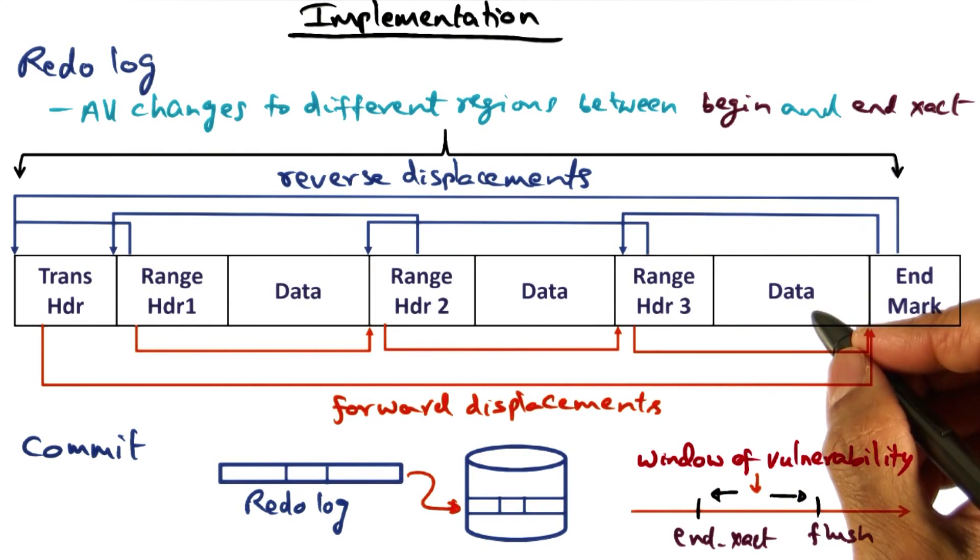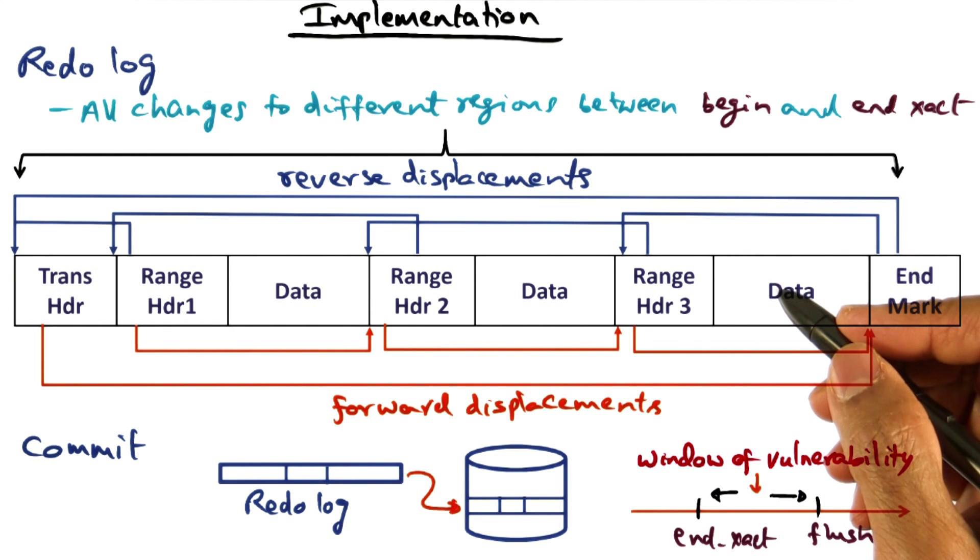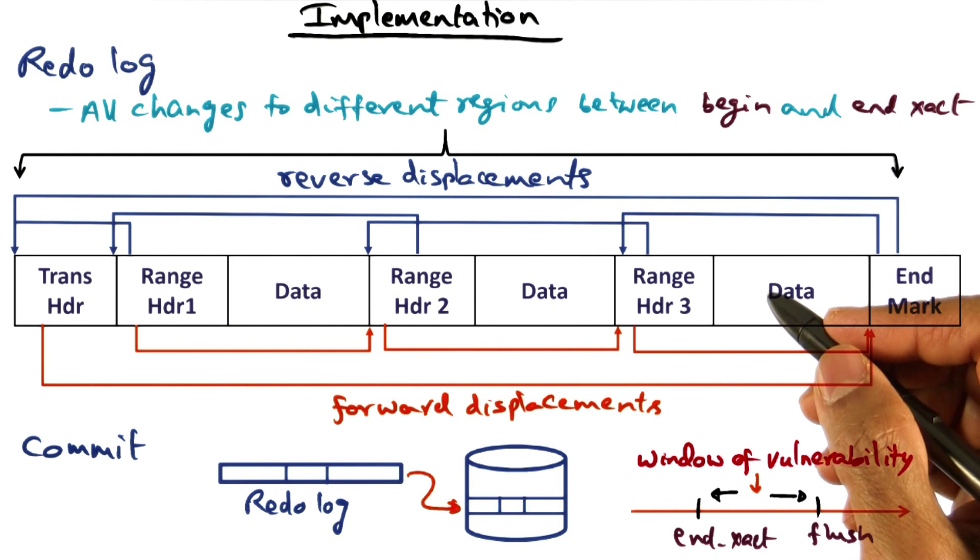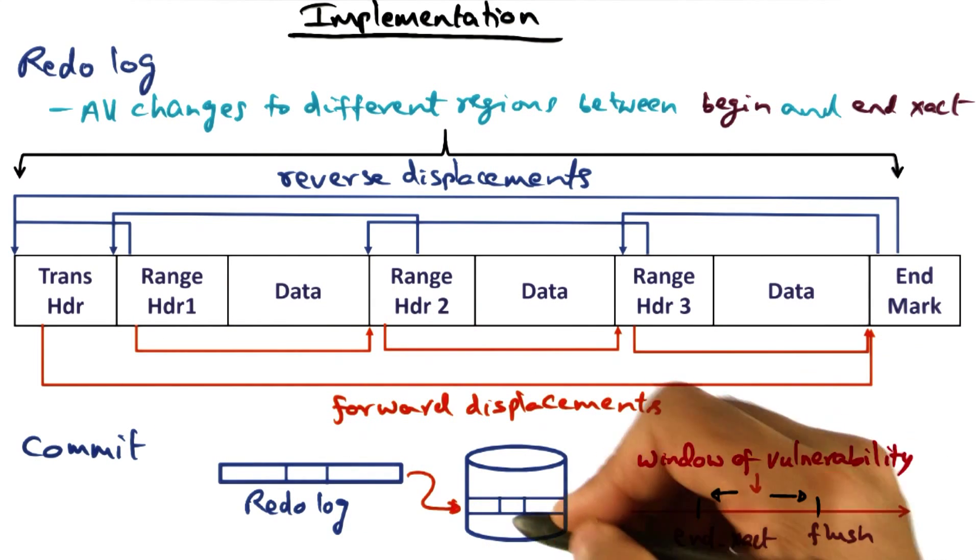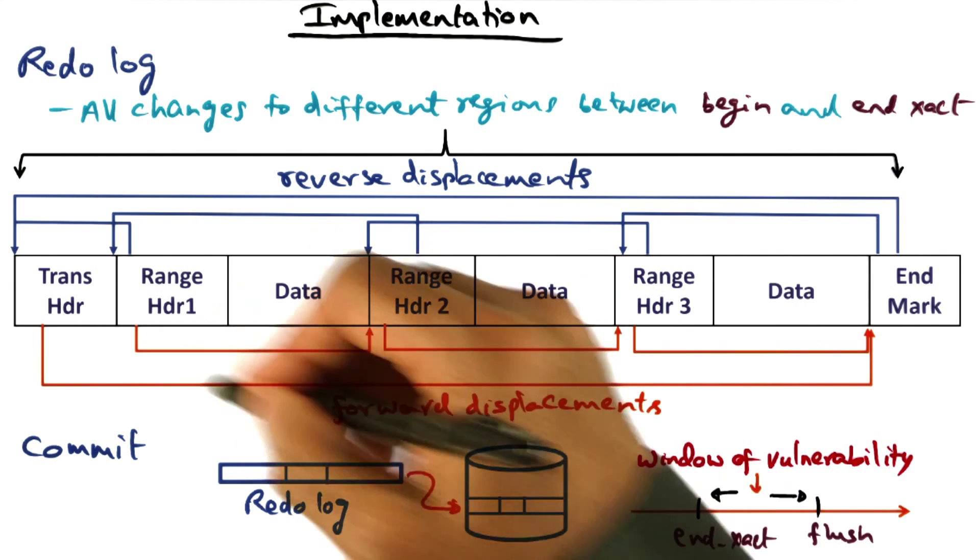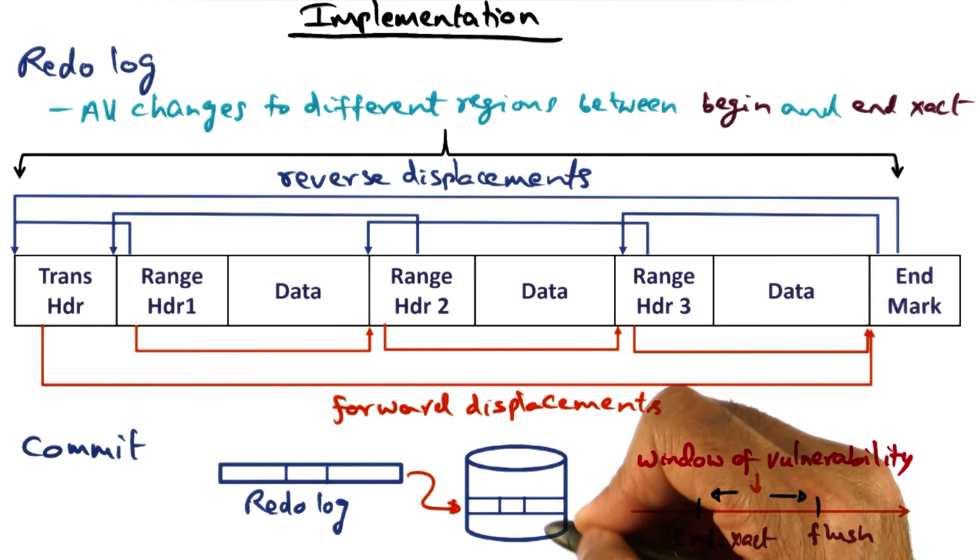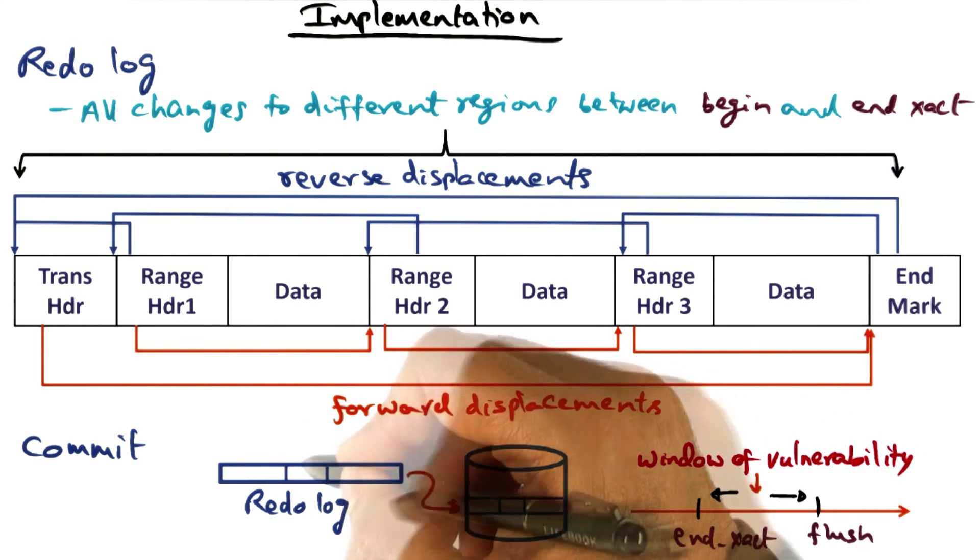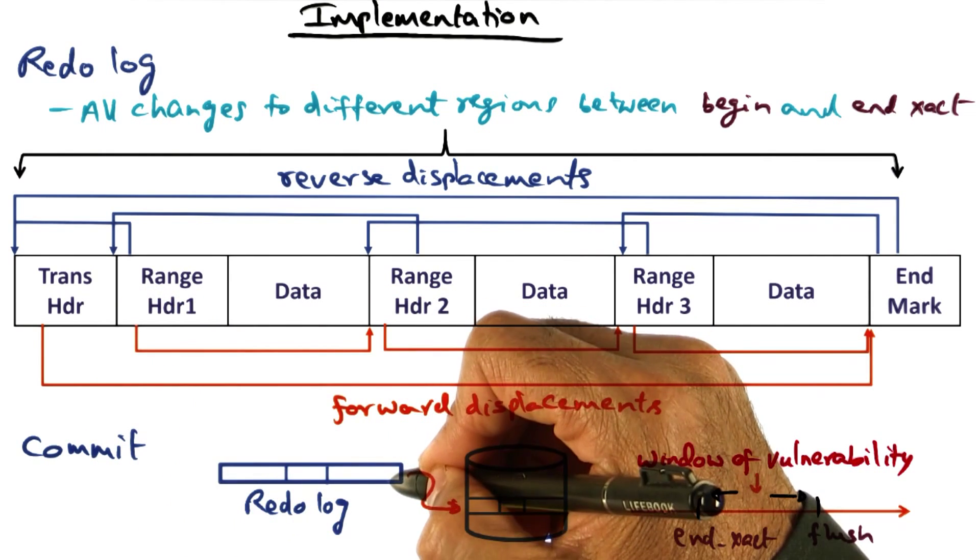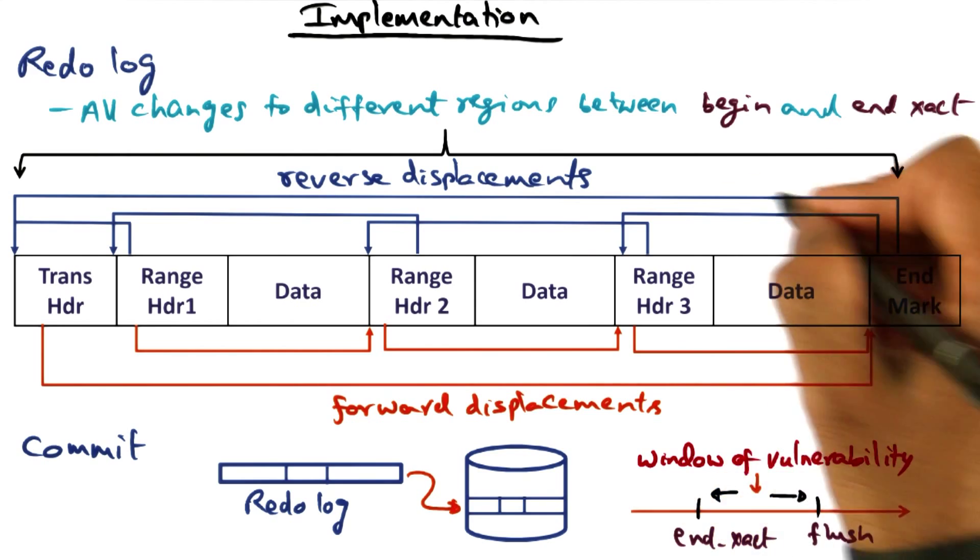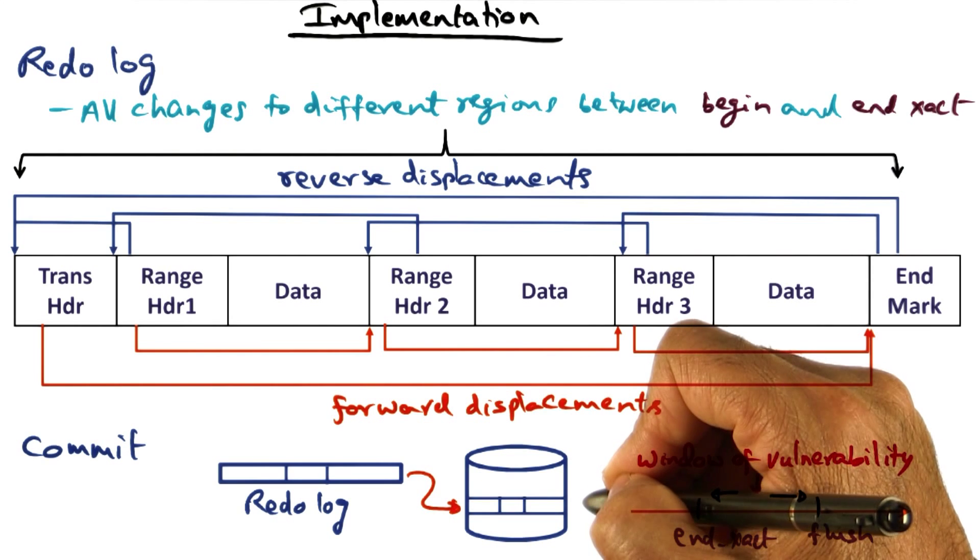You can see that this redo log data structure allows traversal in both directions, and this is for flexibility in implementing the RVM runtime. In particular, writing to the on-disk version of this redo log, having these forward displacements allows you to know where exactly to append to the existing redo log record from the changes done in this particular transaction. Similarly, the reverse displacements are helpful in traversing the log record during recovery.